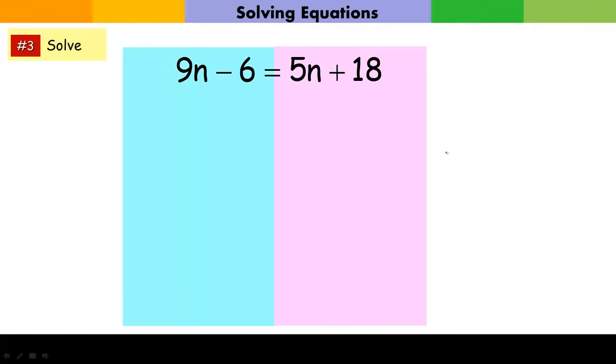Again, I'm going to be picking my sides here, and I see that 9 is larger than 5, so I'm going to collect my variables on the left side and my constants on the right. I always go about moving my variables first off the constant side, so I'm going to get rid of this 5n by subtracting 5n. Of course, that will sum to 0. But if I do it to this side, of course do it to this side.